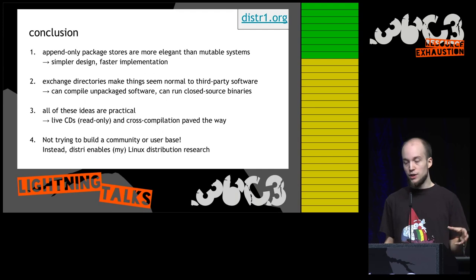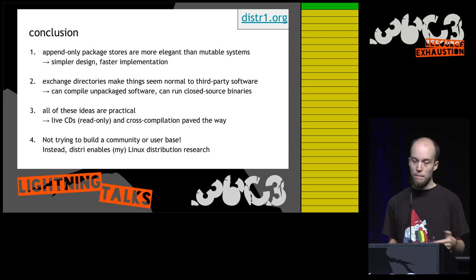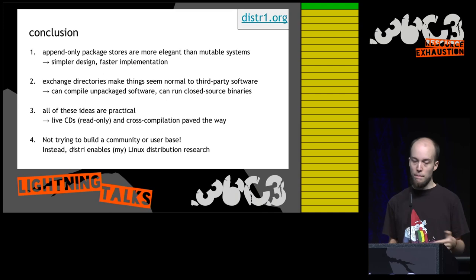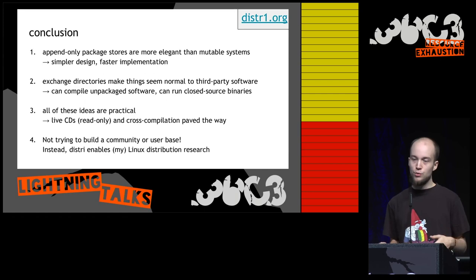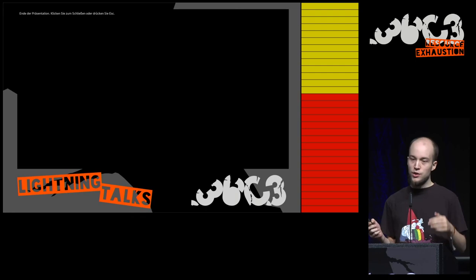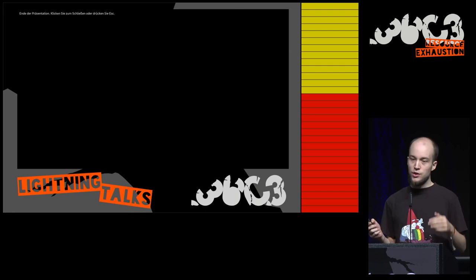Using exchange directories with symlinks for compatibility makes things seem normal enough to third-party software — we can compile packaged software and run closed-source binaries. All ideas presented are practical; live distros have paved the way with read-only environments and cross-compilation. I'm not trying to build a community or user base — distri is a research project. I want to encourage you not to accept slow Linux distributions and raise the bar. Check out distri.org. Thank you.